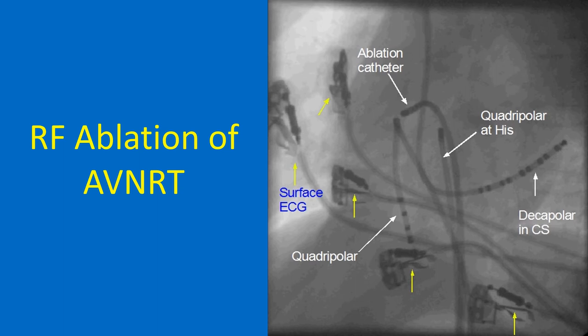The LAO view is foreshortened, while the RAO view can better detect superior-inferior catheter tip movements during slow pathway ablation. Slow pathway ablation is performed near the superior lip of the coronary sinus.